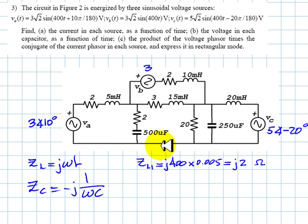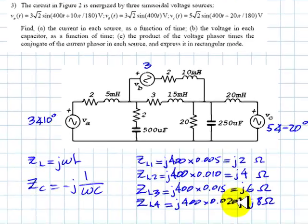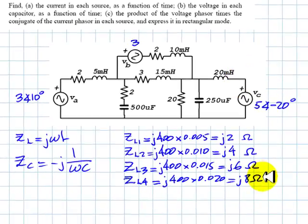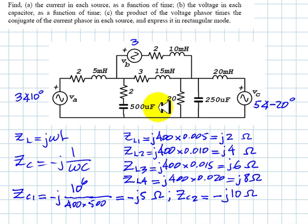For the 5mH inductor, the impedance is j2 ohms. The impedance for the 10mH inductor is j4. The impedance for the 1.5mH inductor is j6. And the impedance for the 2.0mH inductor is j8 ohms. The impedance for the 500µF capacitor is -j5 ohms. And the impedance of the 250µF capacitor is -j10 ohms.